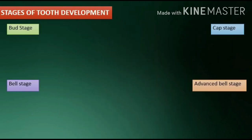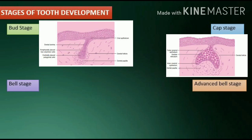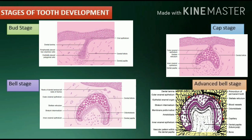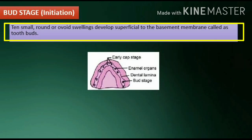Stages of tooth development: The stages of tooth development can be divided into the following stages on the basis of the shape of the enamel organ: bud stage, cap stage, bell stage, and advanced bell stage.